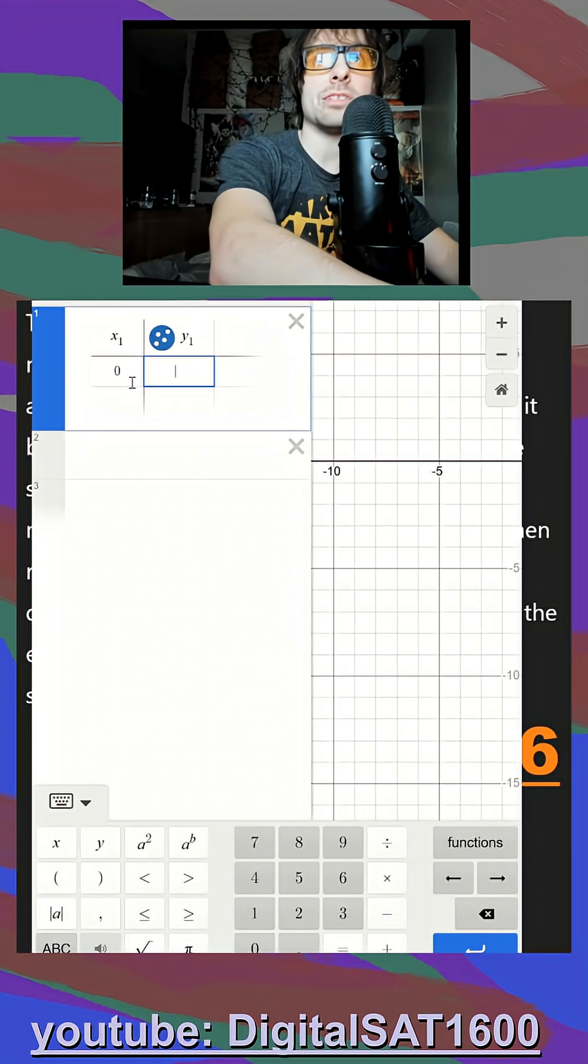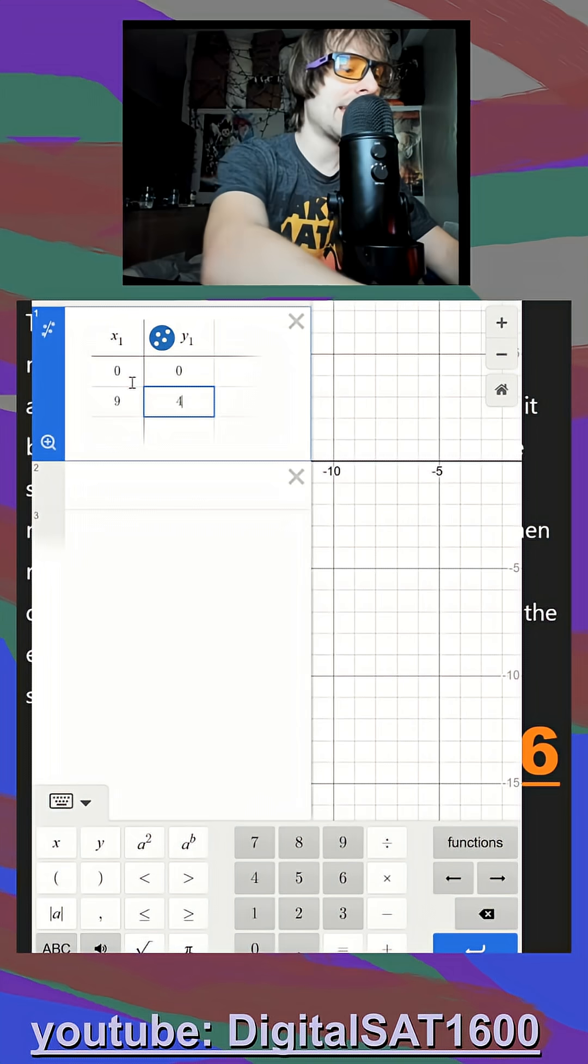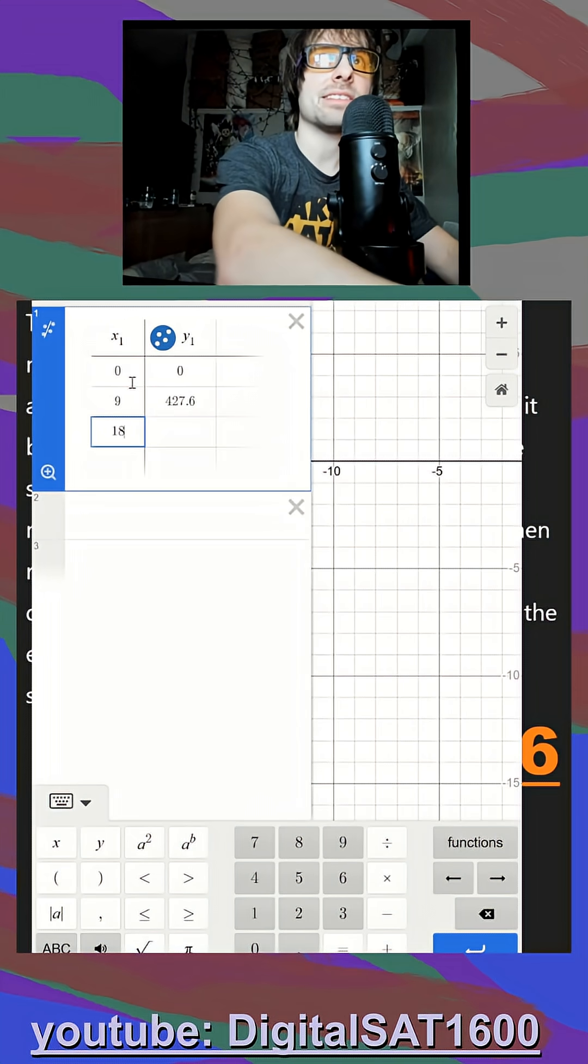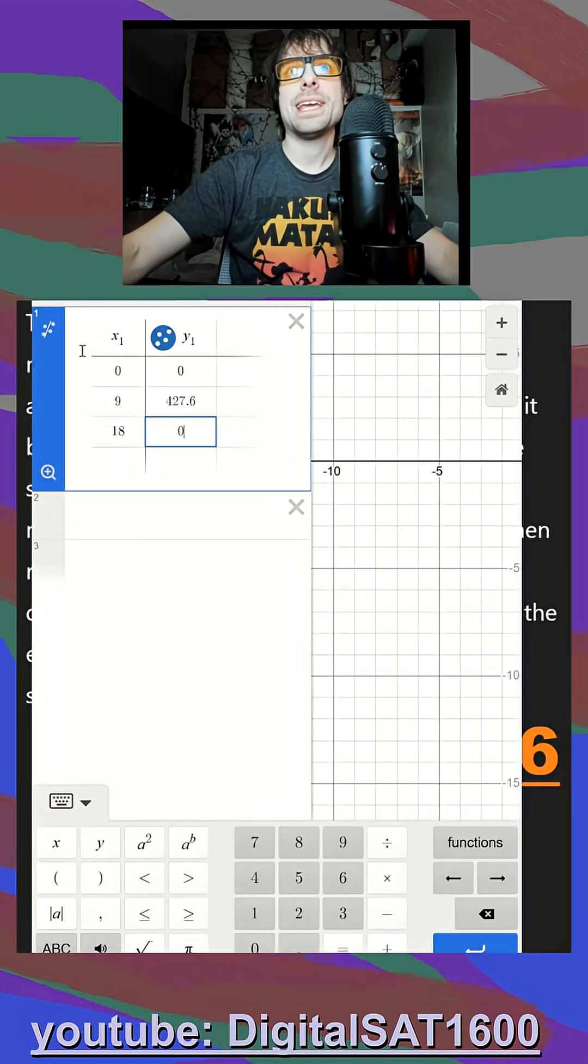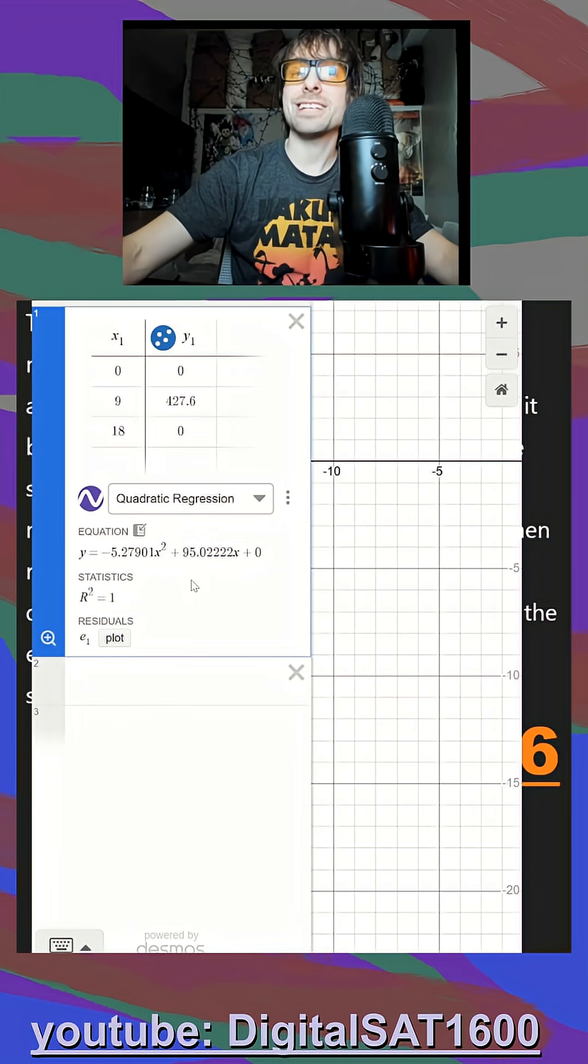And my first point is 0, 0 that we just derived. My second point, my vertex, is 9, 427.6. And my other x-intercept is when x is 18, we're at 0. I graph this. I remember to make it a quadratic regression because it's x squared.